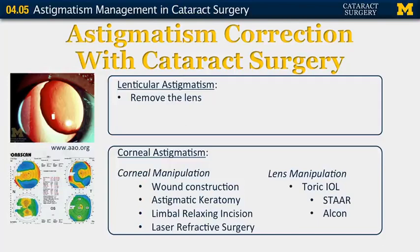The point of this talk is how do we correct astigmatism with cataract surgery? The easiest form is lenticular astigmatism — we simply remove the lens, which is what you're doing with cataract surgery anyway. More complexity occurs when we're talking about corneal astigmatism, where there are a number of different potential ways to correct astigmatism, and we'll go into these in greater detail.